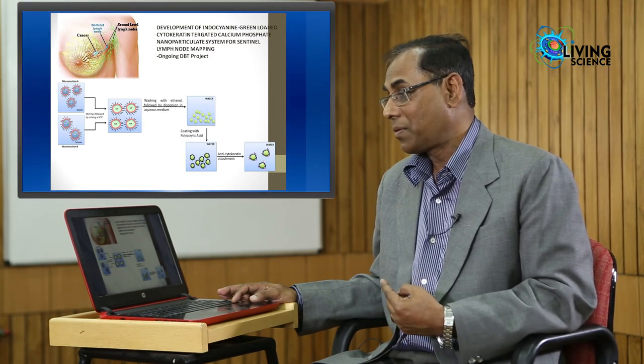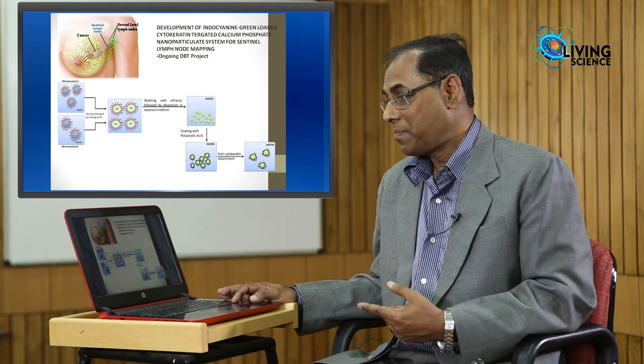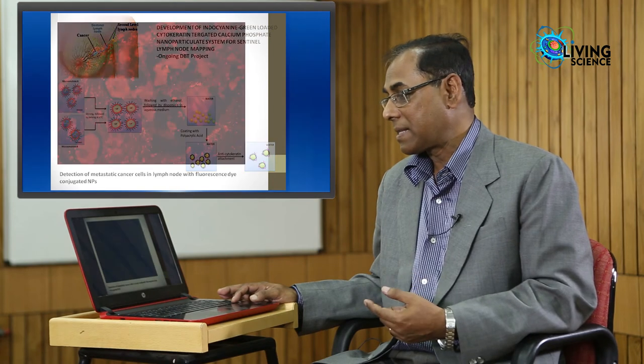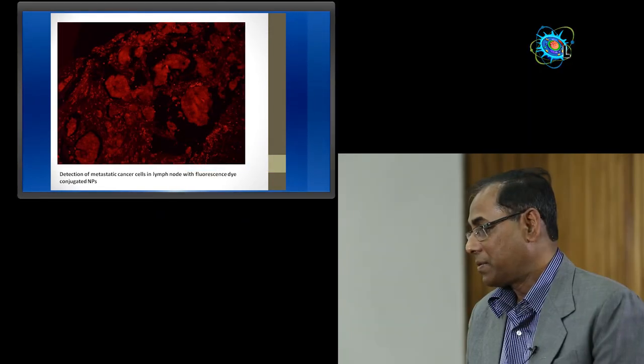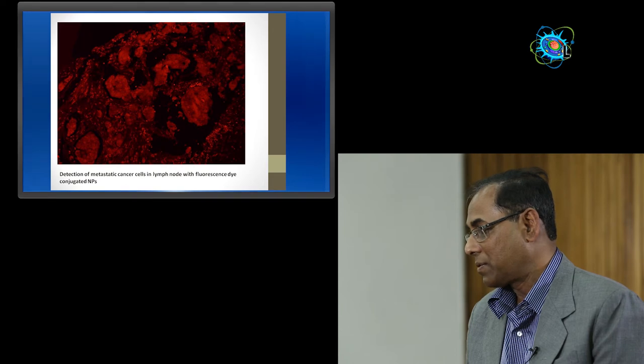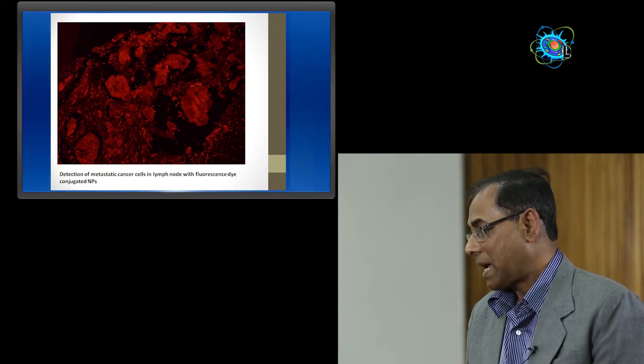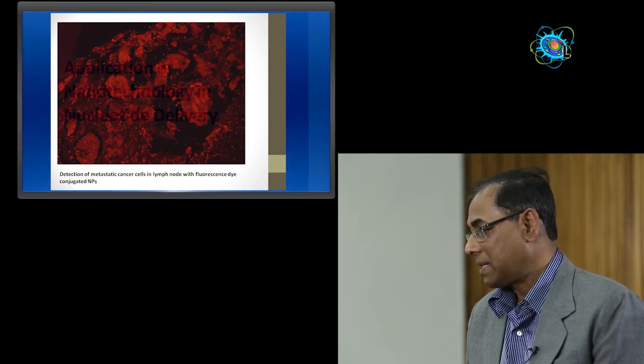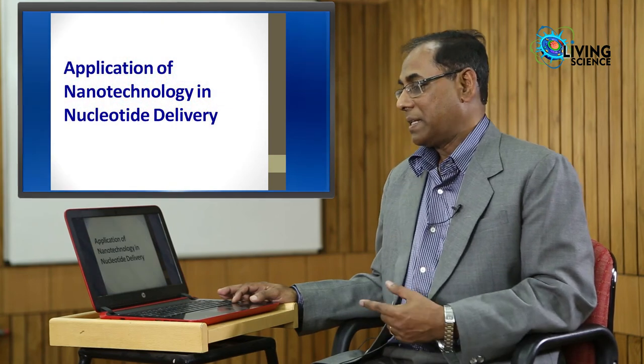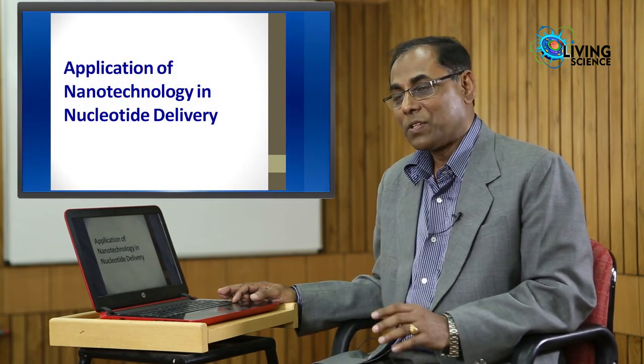Currently, we are developing another system to detect early sentinel lymph nodes. Sentinel lymph nodes are the early lymph nodes where cancer cells spread. This is very important for breast cancer and head and neck cancer. As you can see, we have used indocyanine green (ICG), and it can tag epithelial cells in the lymph node.